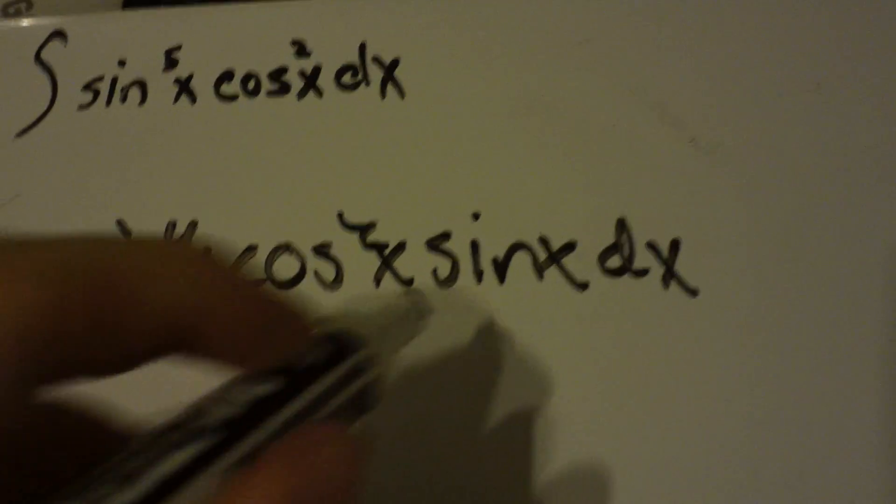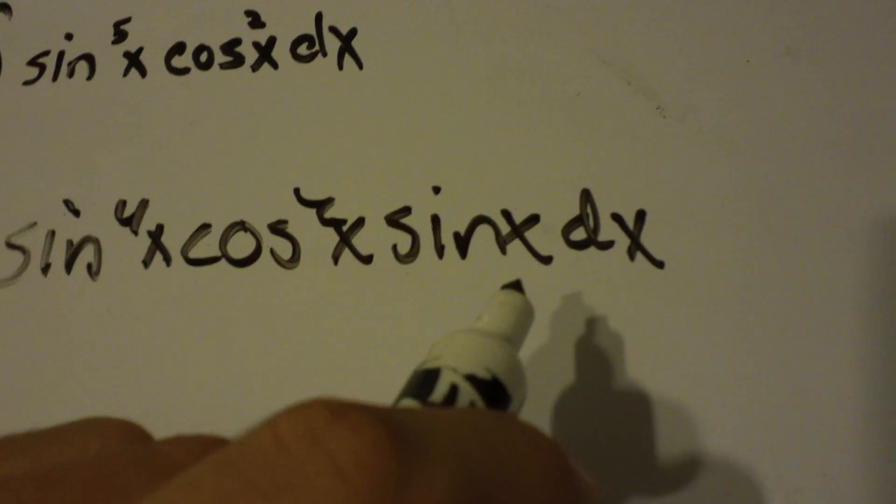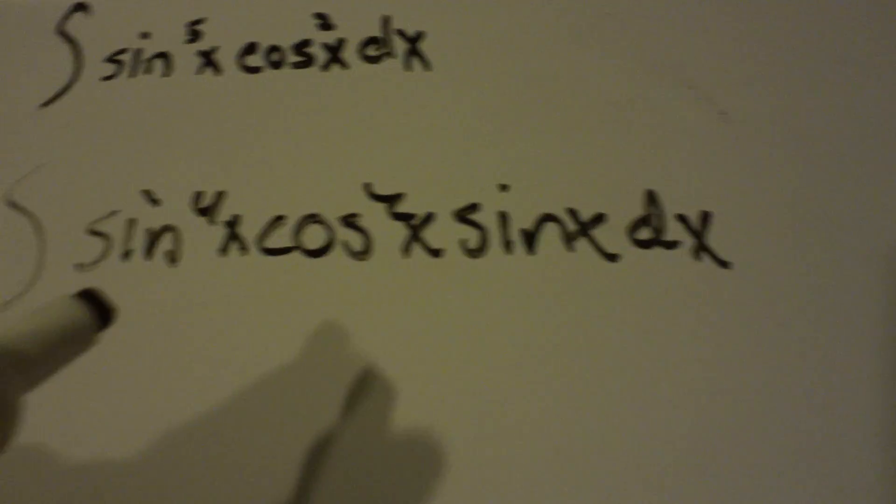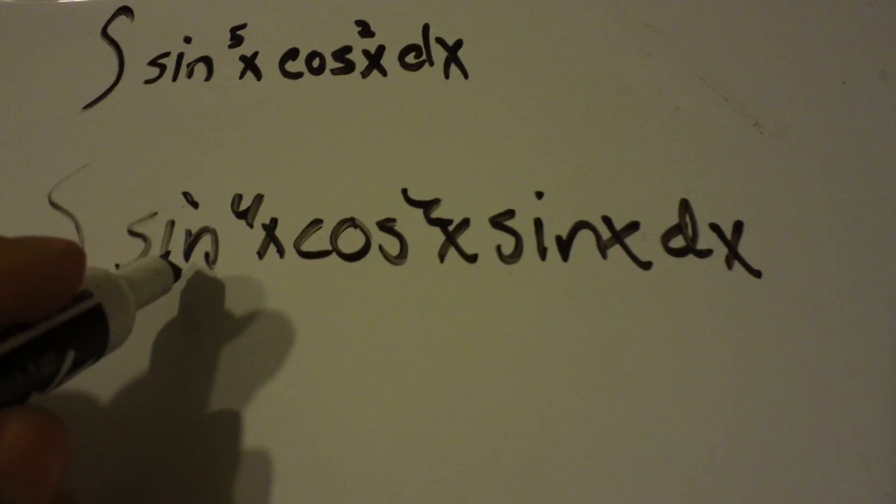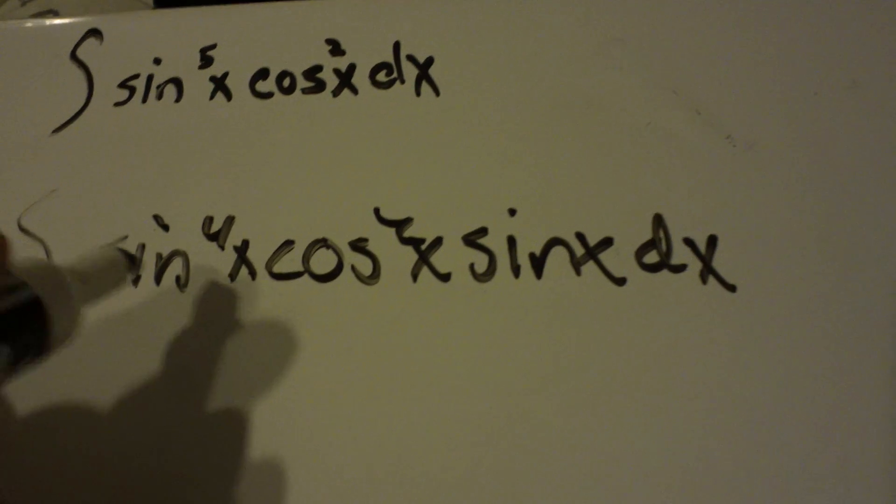So now, this sine x dx over here is going to be our du in a minute, and I'll explain that. But we need to get this sine to the fourth, we need to turn this into cosine somehow.